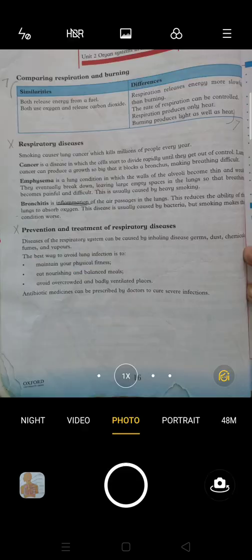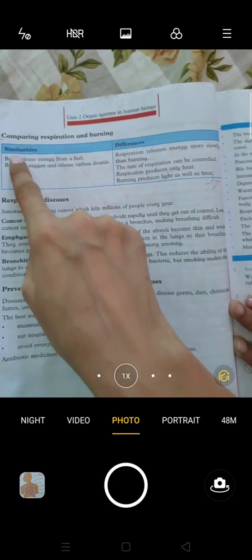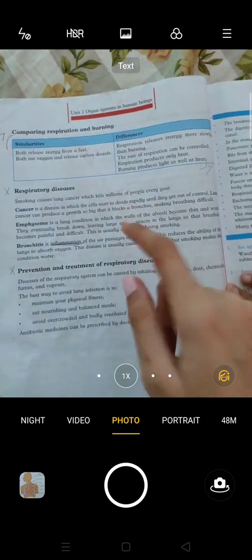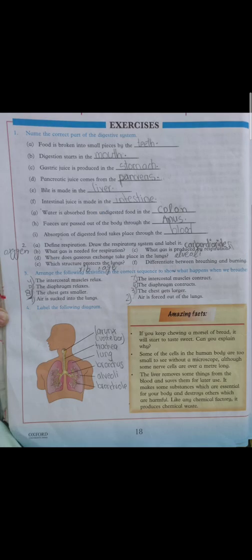Next is: what is the difference between respiration and burning? Here you can see on page 16 there are given similarities and differences between respiration and burning. This is the answer of this question. Next is a project - you can leave the project. The next question is: name the correct parts of the digestive system. Part 1 - food is broken into small pieces by teeth.